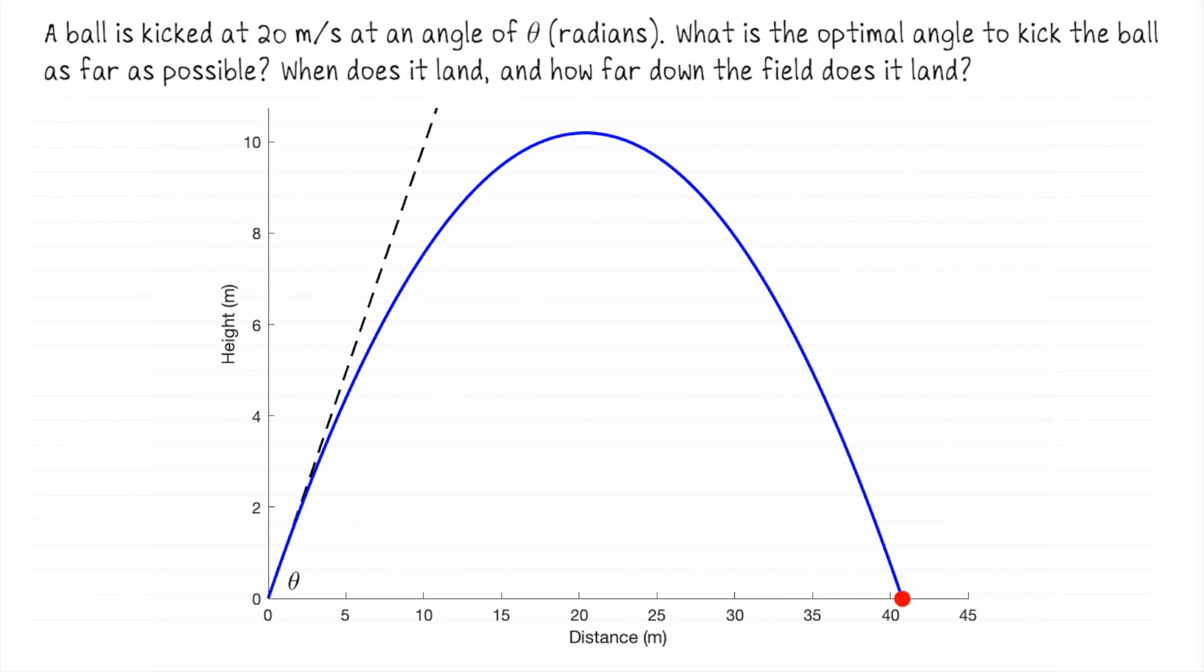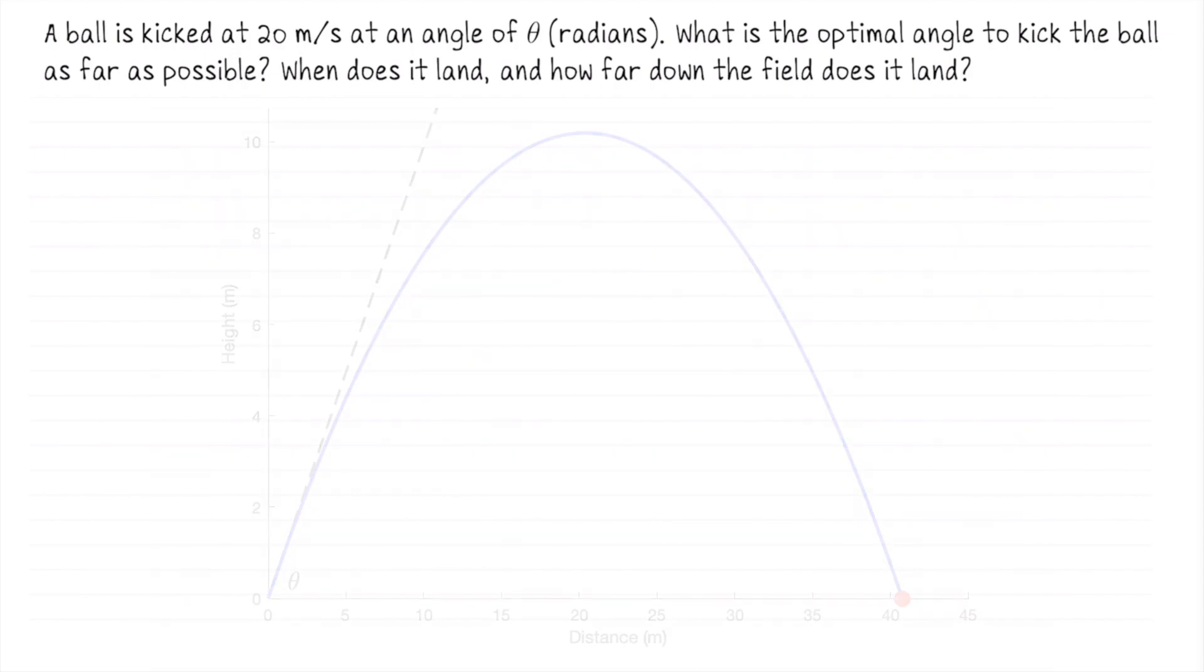This is a projectile motion problem, so we are going to start with acceleration, then work to velocity, and then work to position. Working with SI units, let's take the acceleration downwards due to gravity to be negative 9.8 meters per second squared. That affects the vertical component only, so we can set up our acceleration vector as the vector a(t) equals 0, negative 9.8.